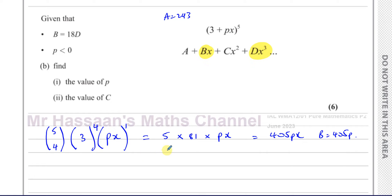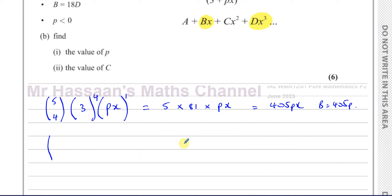Now we want to find the actual value of p. So what we're going to do is we're going to use the other piece of information because B is connected to D by being 18 times it. So I'm going to think about the D coefficient. Now the D coefficient is going to be when we have the x cubed term. So we have here 5, this will be 3, this will be px, so this will have to be raised to the power of 3.